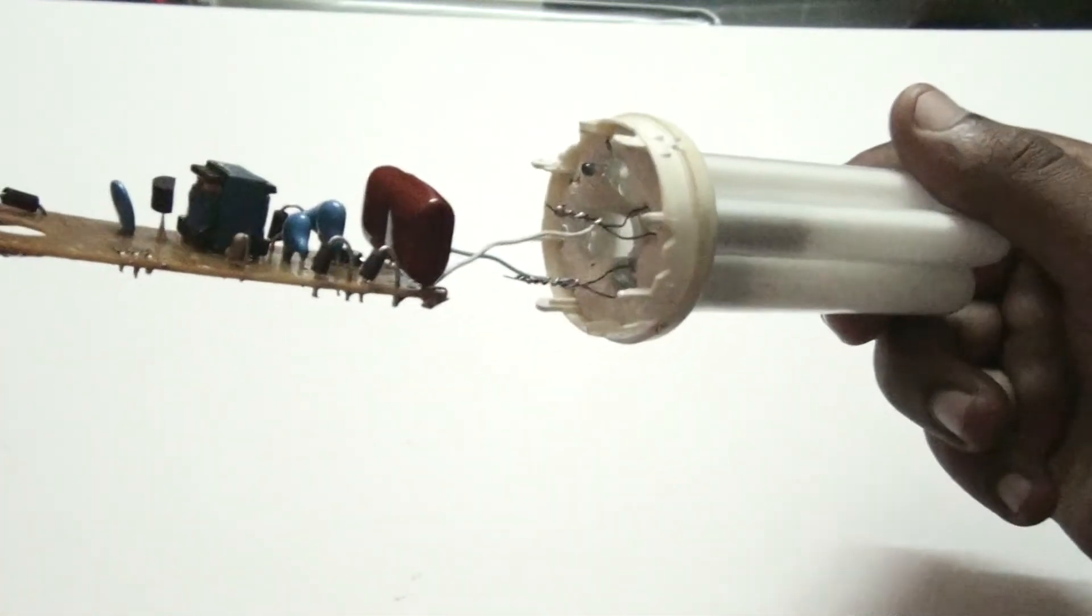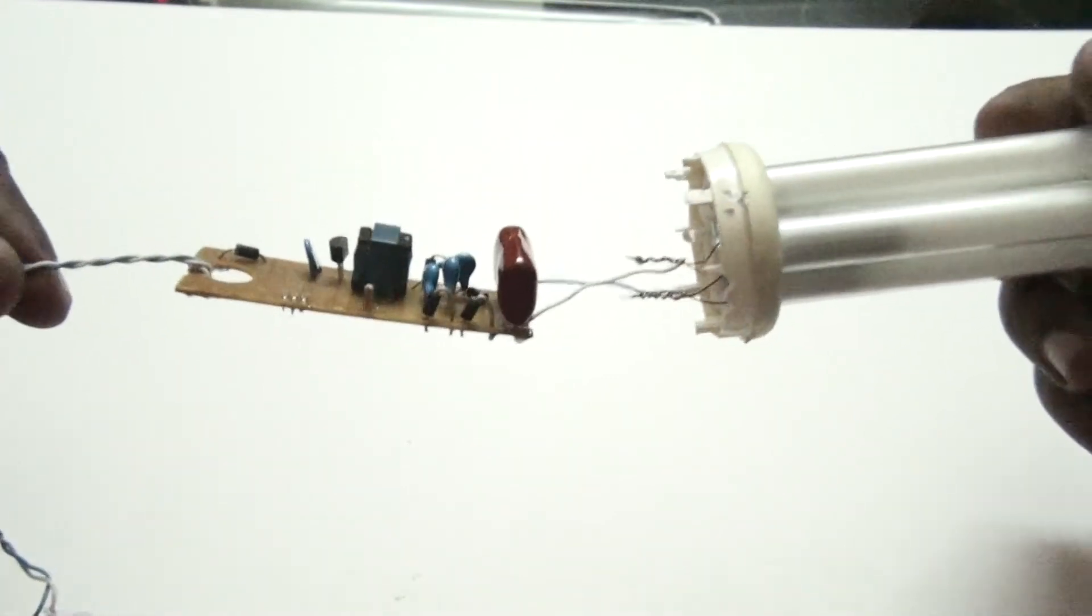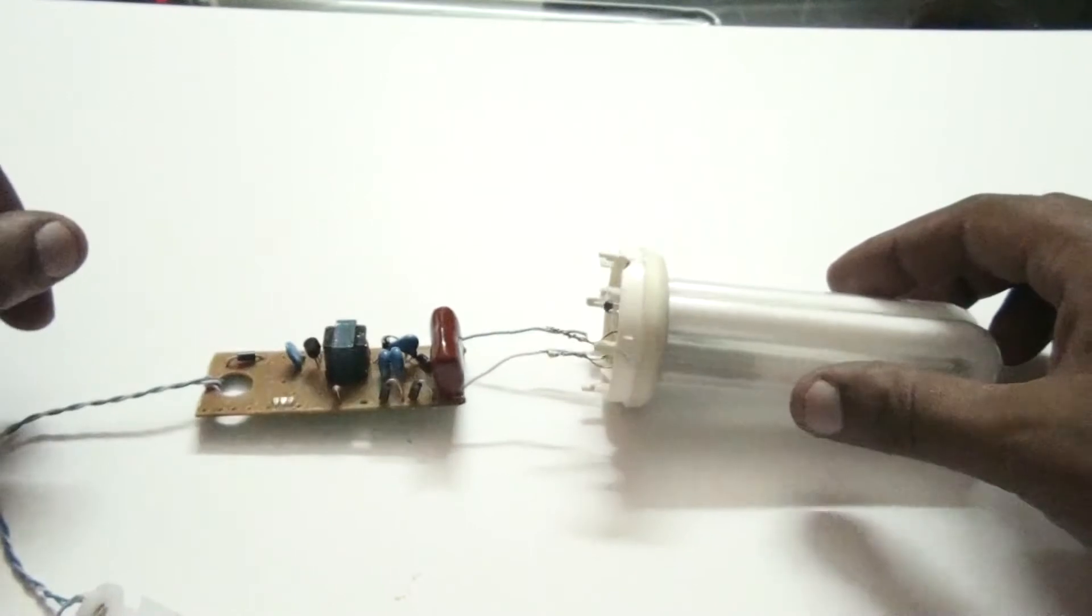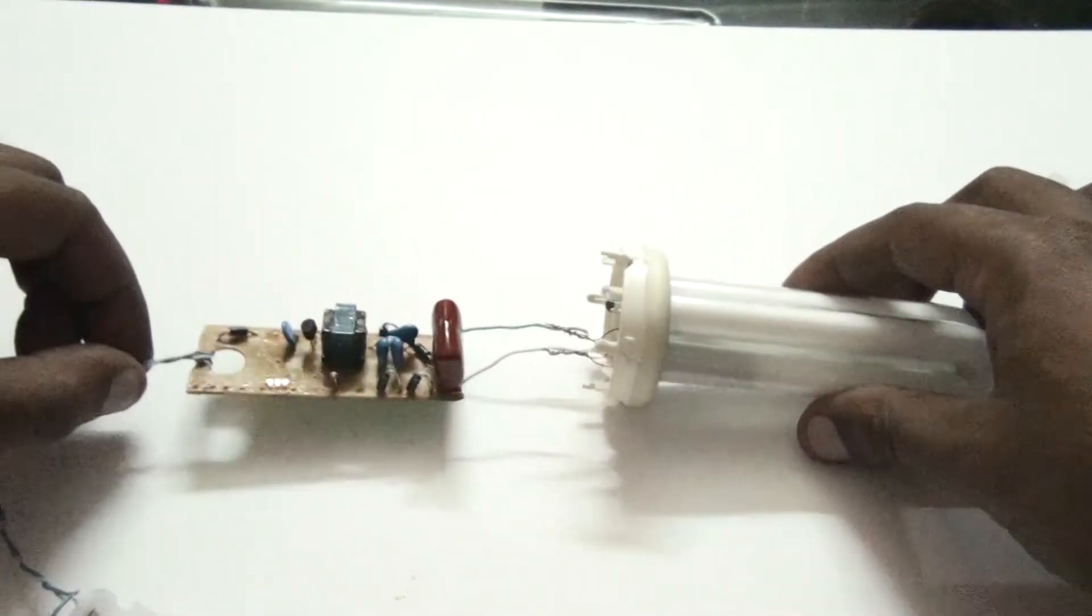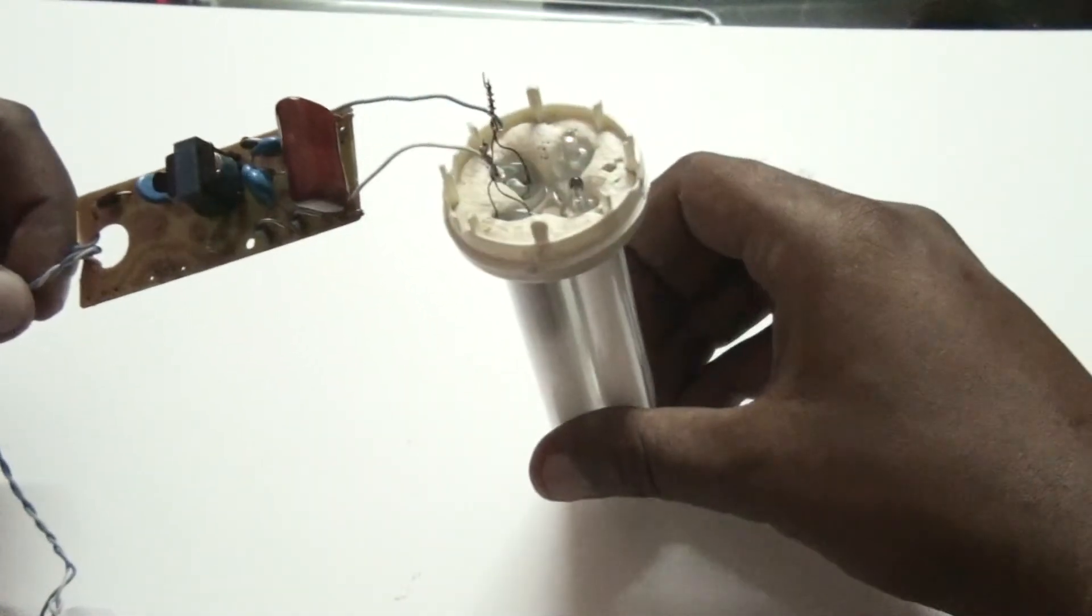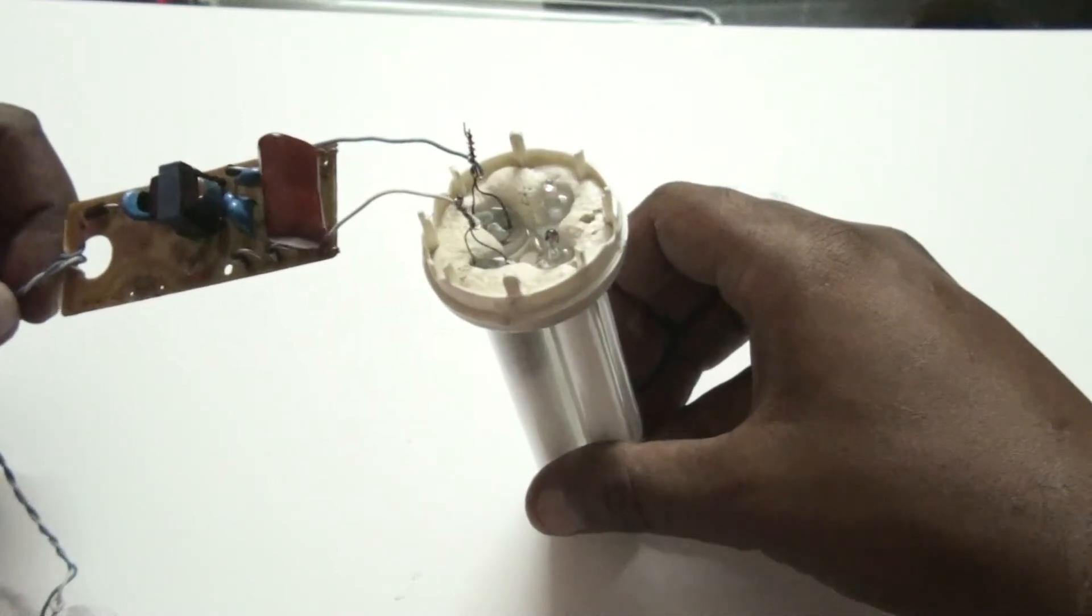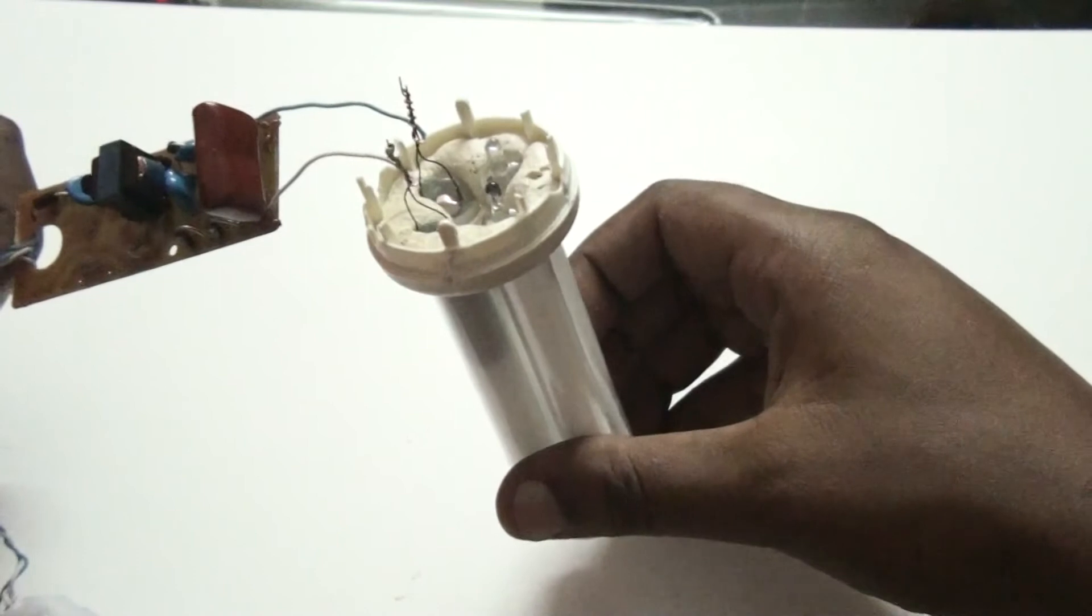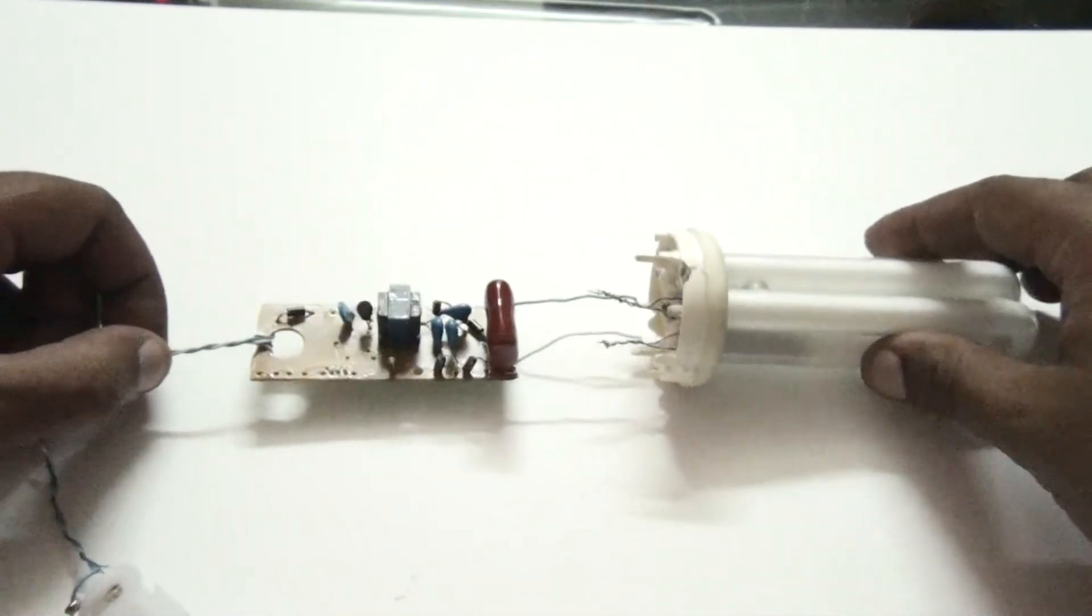Now this one has a 2,000 volt capacitor. A few others that I ripped apart had a 1,600 volt capacitor, and this was a CFL which wasn't working. Got the guts removed. Four leads out. Shorter two and those two go to the capacitor.